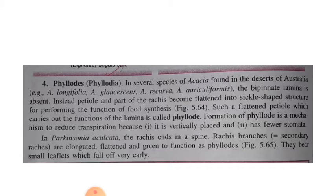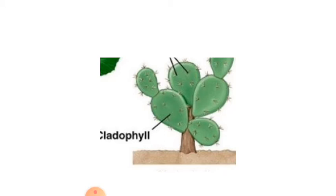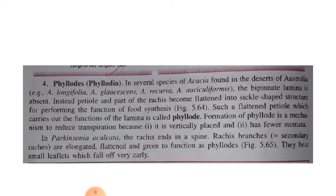Another type is phyllodes. In seven species of acacia found in the deserts of Australia, such as Acacia longifolia, the bipinnate lamina is absent. Instead, the petiole and parts of the rachis become flattened into a sickle-shaped structure to perform the function of food synthesis.